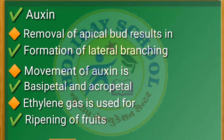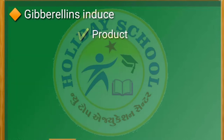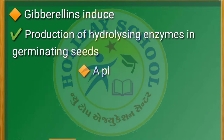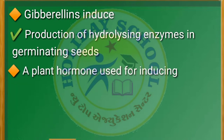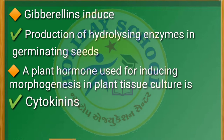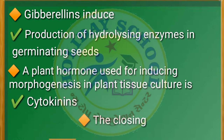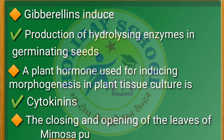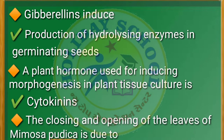Next question: the removal of apical bud results in — the answer is formation of lateral branching. Next question: movement of auxin is — the answer is basipetal and acropetal. Next question: ethylene gas is used for — the answer is ripening of fruits.